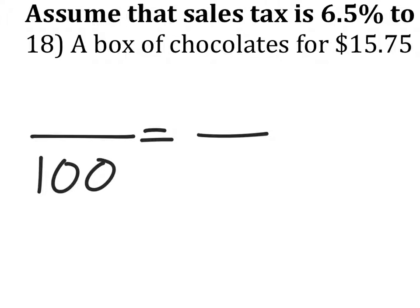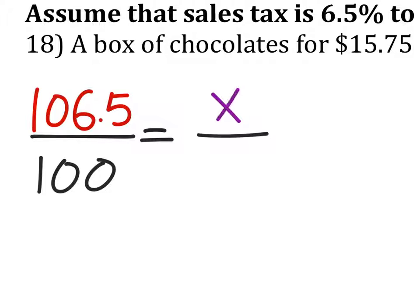Alright, we've got 100% right here. Now we've got 6.5%, but I'm going to add that to the 100% because that's how much I'm going to pay — 106.5%. We don't know that value, but we know the box of chocolates is $15.75.